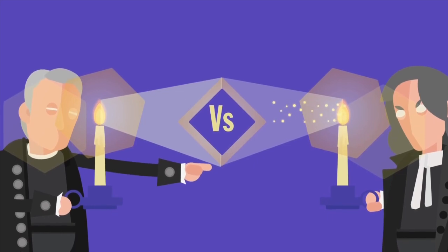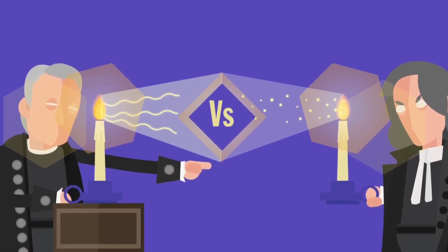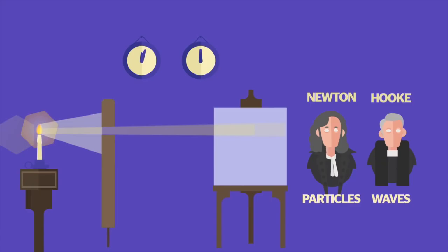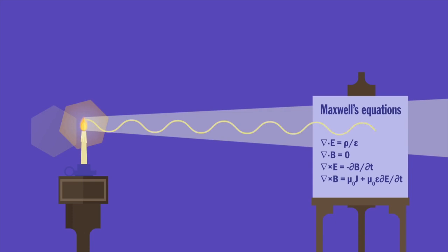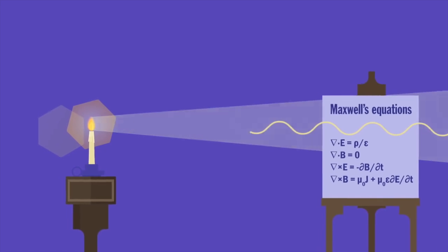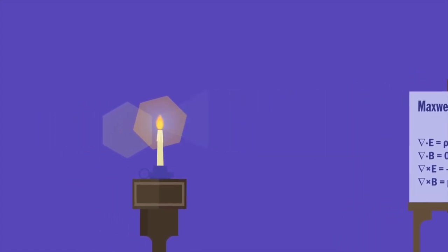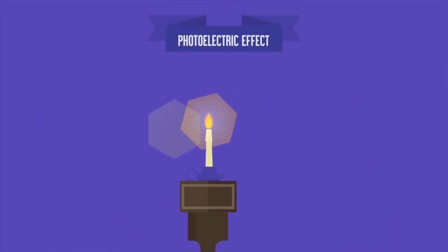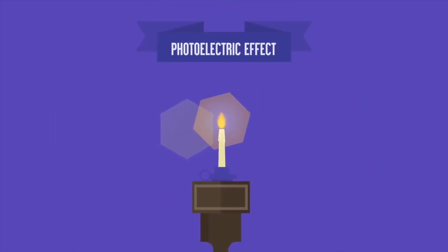Newton, in 1672, had thought light was made of particles. Hawke thought it was a wave. Maxwell's equations describing light's behavior also made the debate die down, until the photoelectric effect was discovered a few years later.